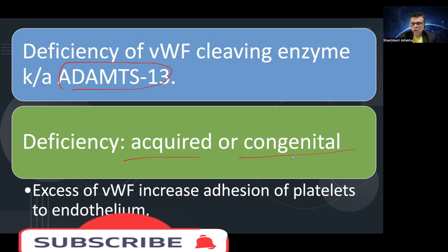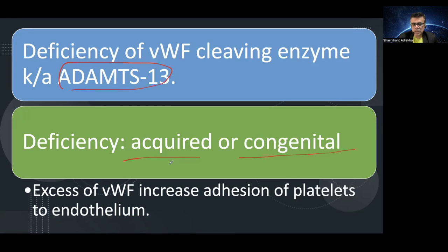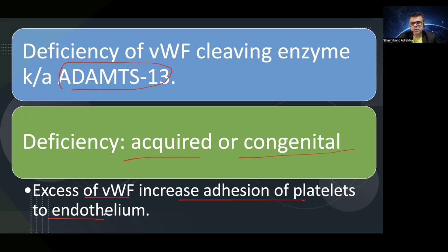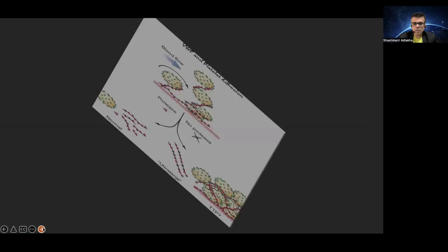The deficiency of ADAMTS13 could be acquired or it could be congenital — the child could be born with a deficient ADAMTS13. In any case, there is an excess of von Willebrand factor that promotes increased adhesion of platelets to the endothelium. Normally, von Willebrand factor acts as a bridge between platelet and endothelium, but in the case of excess von Willebrand factor, there is persistent adhesion of platelets to the endothelium, giving rise to thrombotic tendency.